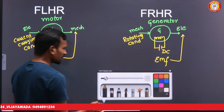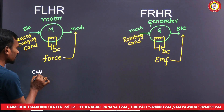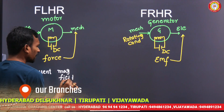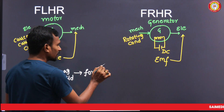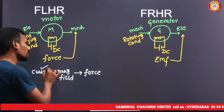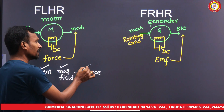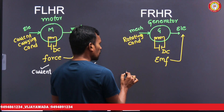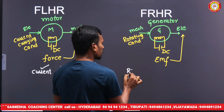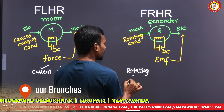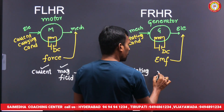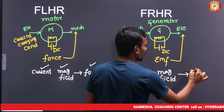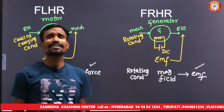So the left hand rule and right hand rule tell us: if you know the current direction and if you know the magnetic field direction, then we can decide the force direction using Fleming's left hand rule. If you know the rotation direction of the conductor and the magnetic field direction, then we can decide the EMF direction using Fleming's right hand rule.